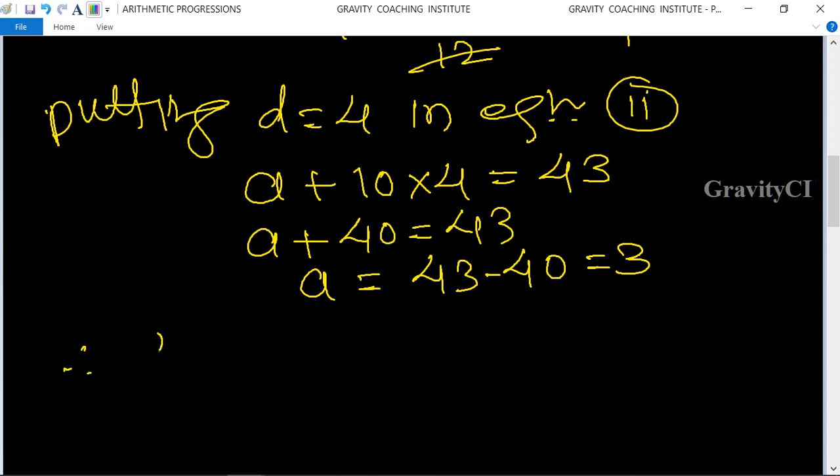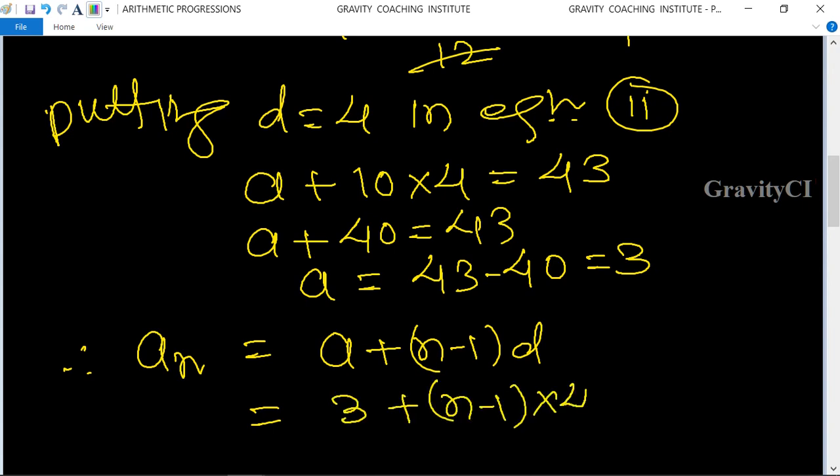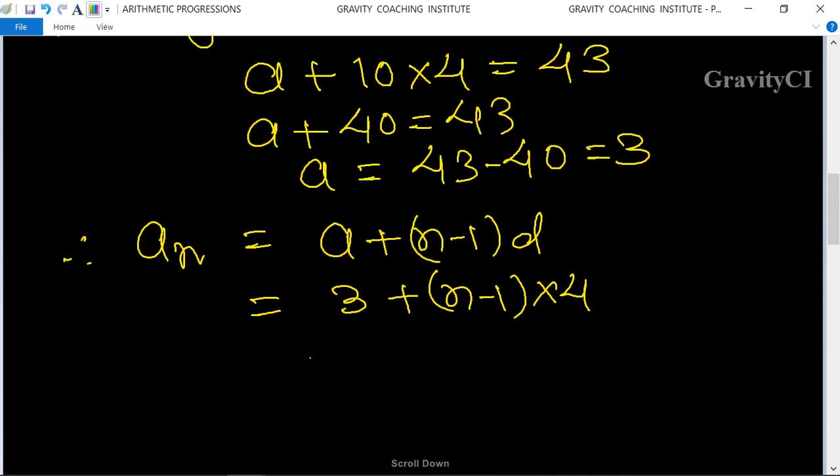Therefore, its nth term is equal to, we know that the formula is a + (n - 1) times d. Now we put the value of a and d, so 3 + (n - 1) times 4. This gives 3 + 4n - 4, which equals 4n - 1, which is our required answer.